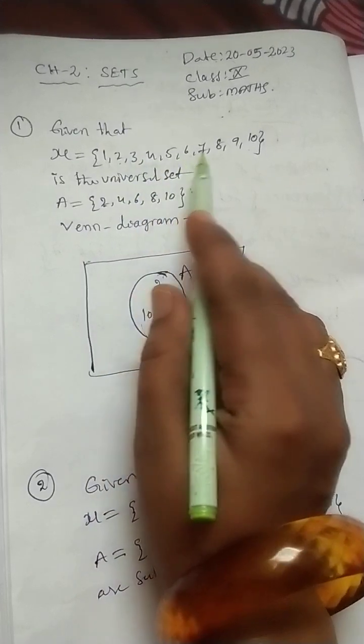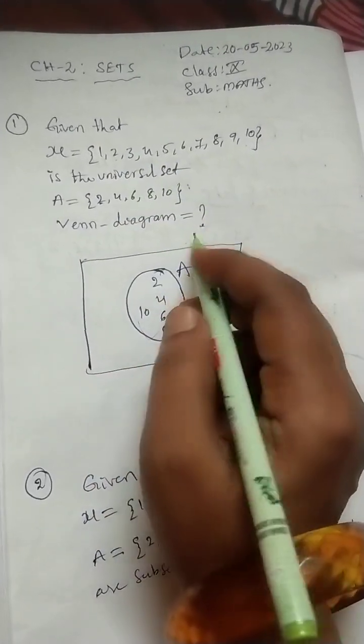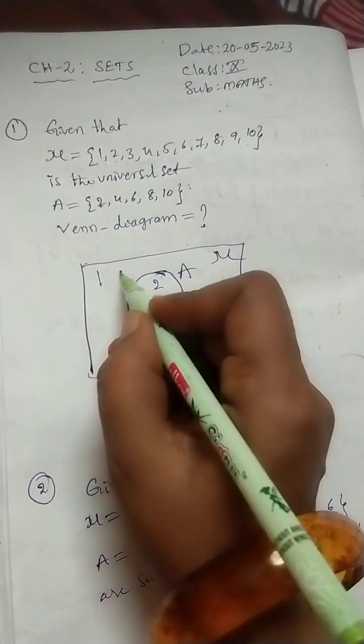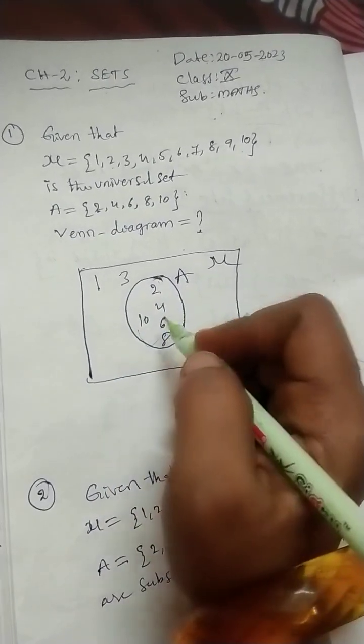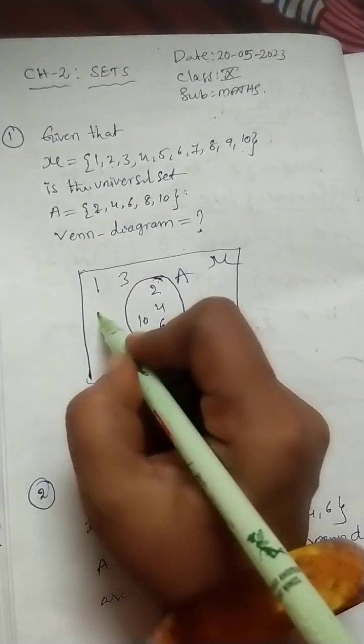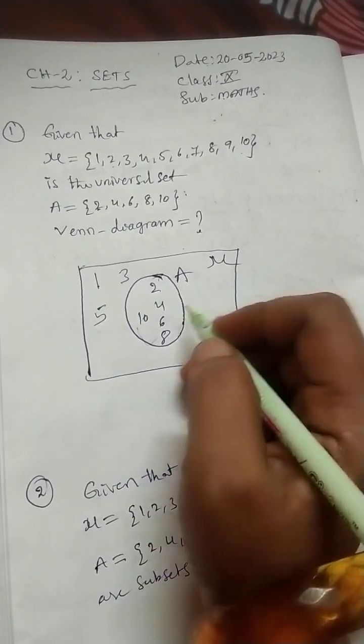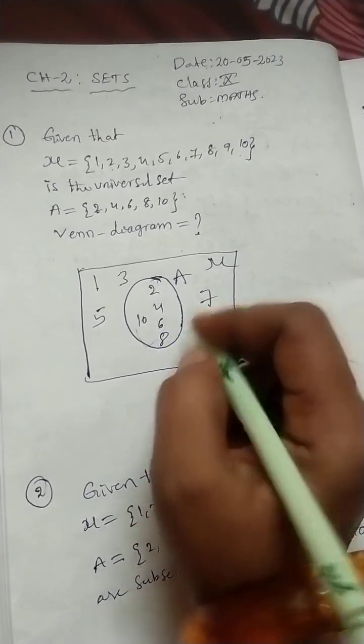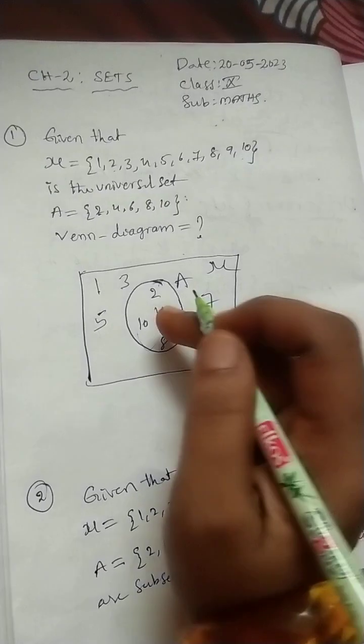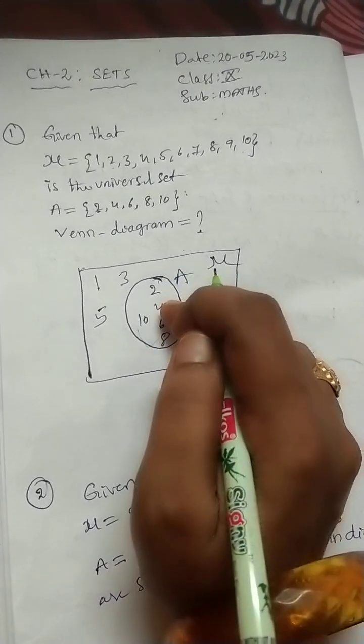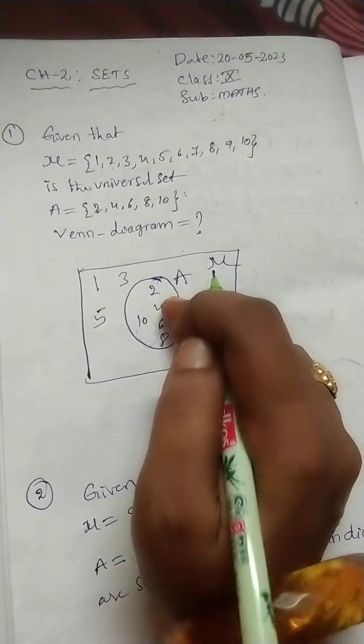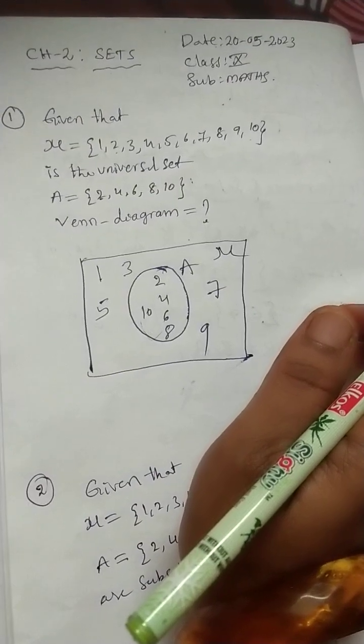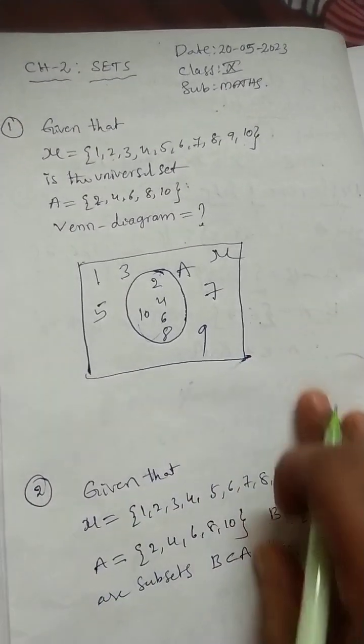These are the set A. Consist of set A. So, except these numbers from the set Mu, universal set. 2 over, 4 over, 6 over, 8 over, 10 over. Remaining numbers we should write. 1 is not there. So, 1 is in the universal set. 3 is in universal set. 5 is universal set. 7, 9. Like this, we can represent the Venn diagram for the given sets.